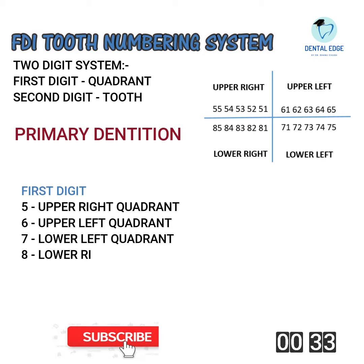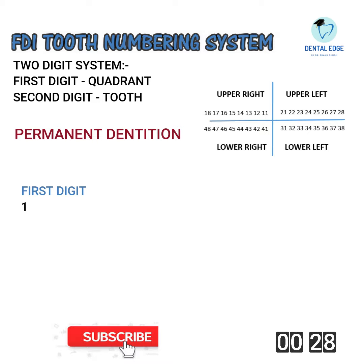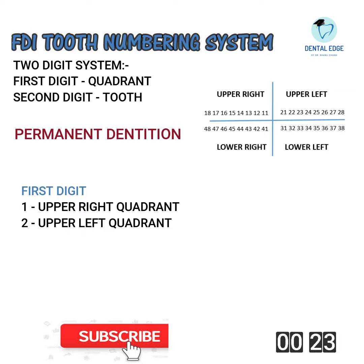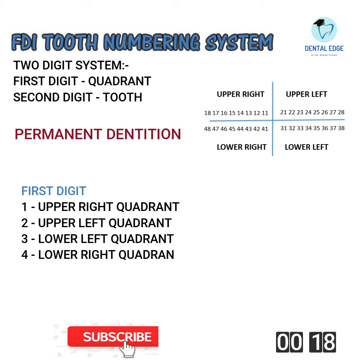The second digit is for the tooth. For permanent dentition, the first digit represents the quadrant: one stands for upper right quadrant, two stands for upper left quadrant, three stands for lower left quadrant, and four stands for lower right quadrant. Again, the second digit stands for the tooth number.